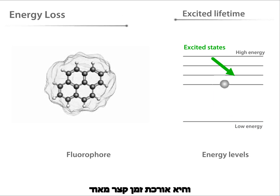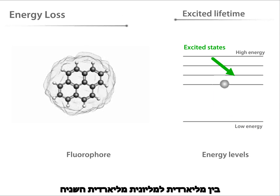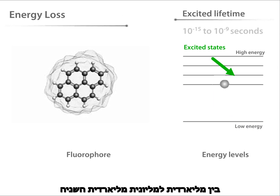The length of time that the fluorophore is in excited states is called the excited lifetime, and it lasts for a very short time, ranging from 10 to the minus 15 to 10 to the minus 9 seconds.